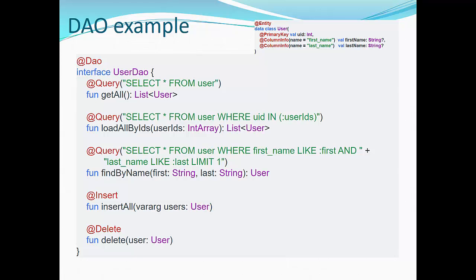So this is an example for DAO for the same entity user that we just discussed. We have an interface annotated with @Dao. The name of the interface is UserDao. We have five separate statements to define functions to access the database. The first query is selecting all data from user, which will be mapping to the Kotlin function getAll that returns a list of users. That's pretty comprehensive, right?